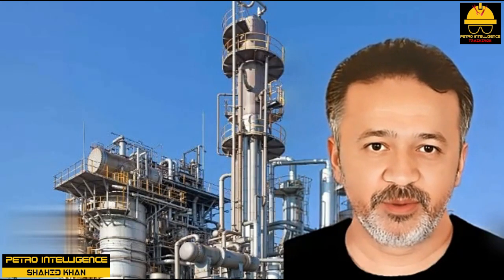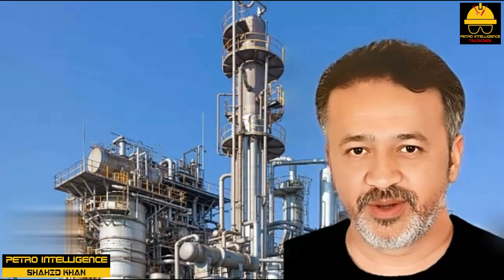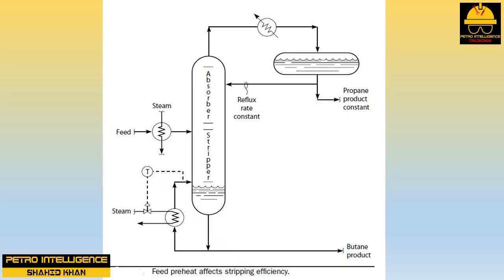Effect of feed preheat: up to this point we have suggested that the weight flow of vapor up the tower is a function of the reboiler duty only, but this cannot be completely true. Looking at this picture, increasing the heat duty on the feed preheater will reduce the reboiler duty. Assuming both the reflux rate and overhead product rate are constant, the total heat flow into the tower is constant — meaning the sum of the reboiler duty plus the feed preheater duty is constant. If steam flow to the feed preheater is increased, the reboiler duty will fall.